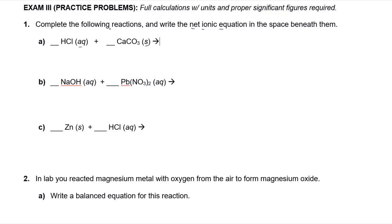Before we get to the net ionic equation, let's get the products. We've got this acid reacting with the carbonate — essentially a displacement reaction. Calcium is going to react to form calcium chloride. You've got to know your formulas: calcium is typically a two-plus, chlorides are negative one. Using your solubility table, calcium chloride is indeed a soluble salt, so we write it as aqueous.